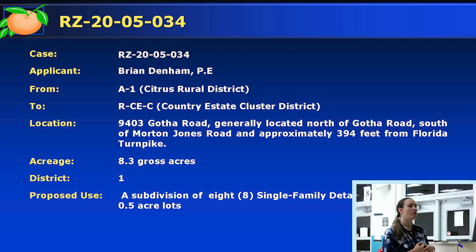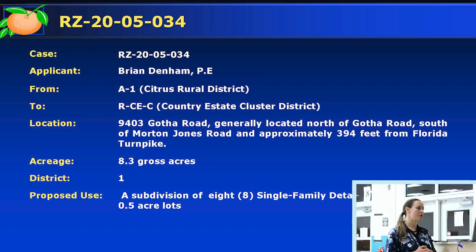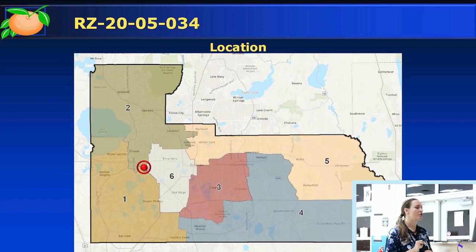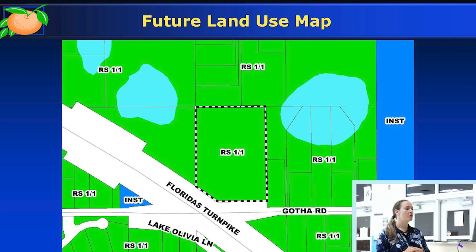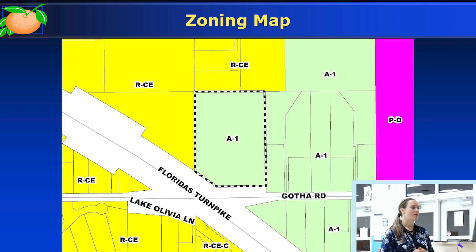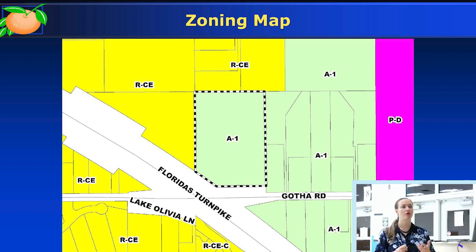Here's the overview of a rezoning request. The applicant has applied to rezone 8.3 gross acres from A1 Central Rural District to RCEC County Estate Cluster District to construct a subdivision of 8 detached houses on 0.5-acre lots. This is the general location of the subject property, District 1. The underlying future land use designation of the subject property is 1 unit per 1 acre, and it's located in a local rural settlement. The current zoning is A1, with the same zoning to the east, RCE zoning to the north, south, and west. A1 zoning currently allows one house and agricultural uses.